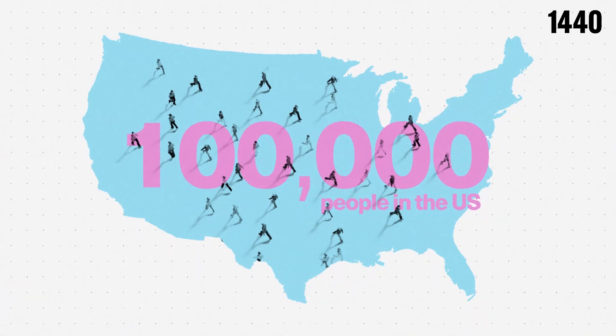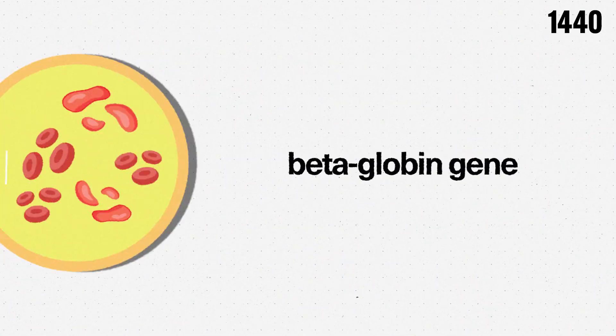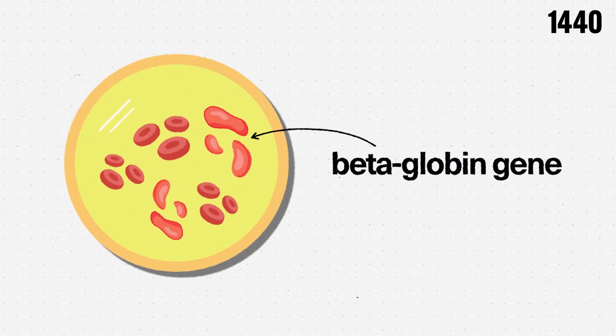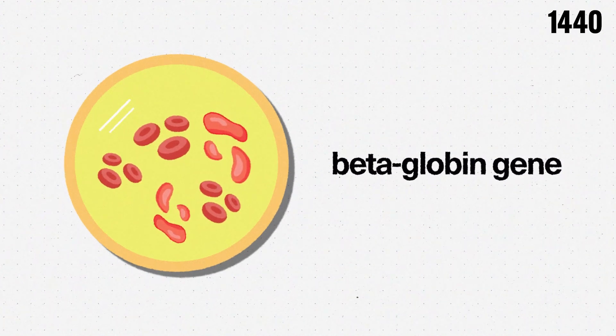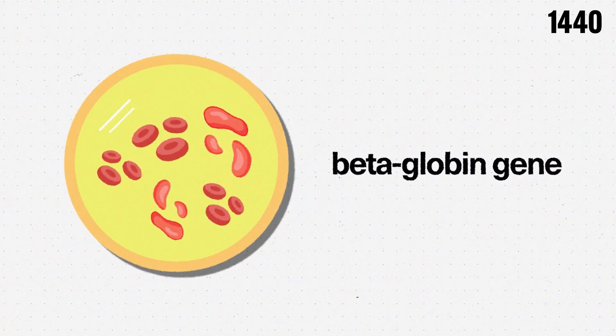Those with the condition inherit a variant of the beta-globin gene that produces abnormal, rigid hemoglobin cells which transport oxygen through the bloodstream.